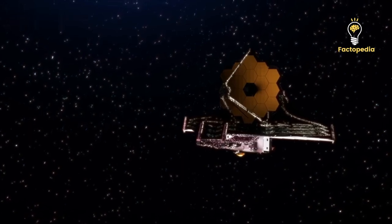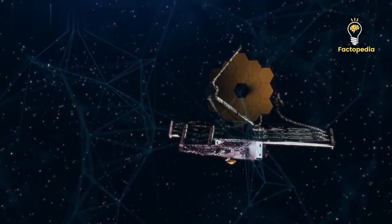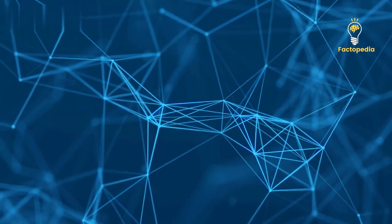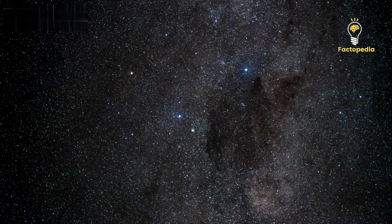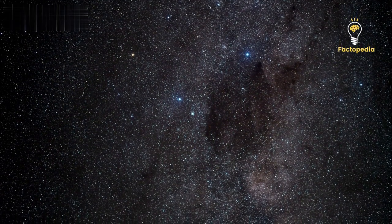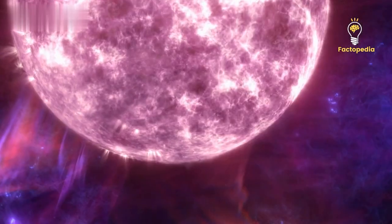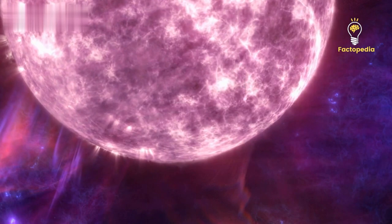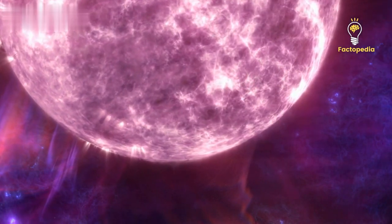The James Webb Space Telescope continues to bring us remarkable discoveries, once again reshaping our understanding of the cosmos. In a recent study, groundbreaking evidence has been unveiled regarding the existence of the earliest stars, stars that are incredibly massive, ranging from 1,000 to 100,000 times the mass of our sun.